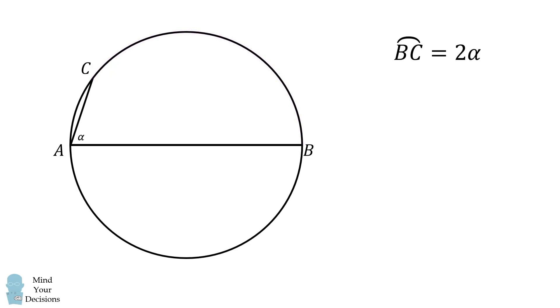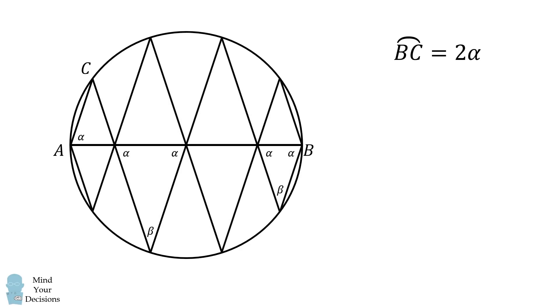We will calculate BC in one more way. Notice we have two inscribed angles, each of which is equal to beta. So, this arc will have a measure equal to 2 beta, and this arc will have a measure equal to 2 beta. Therefore, BC will have a measure that's equal to 4 beta.